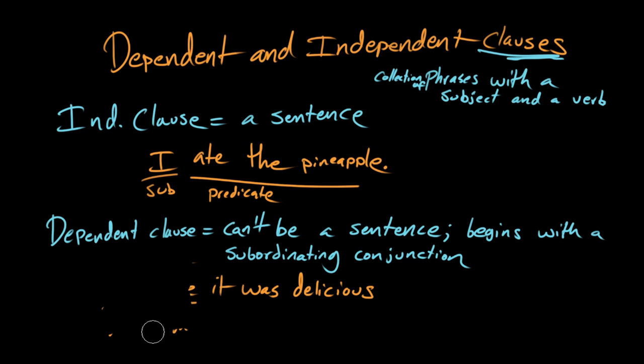Now if it was just on its own, it was delicious, yeah, of course. That's a sentence. The part that makes it dependent is this subordinating conjunction. You put that onto the front of it and all of a sudden it needs an independent clause to lean up against.